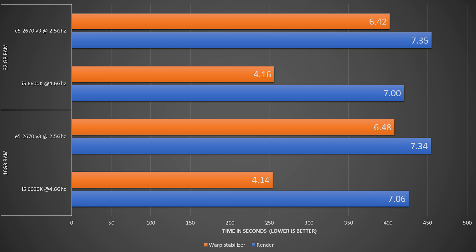Probably the weirdest thing I noticed is that the difference between 16 gigabytes and 32 gigabytes of RAM was basically unnoticeable and could probably fall within testing variance. But most importantly, the i5 was a bit faster at rendering the project than the Xeon — a bit by a few seconds, not very significant, but still an interesting finding.